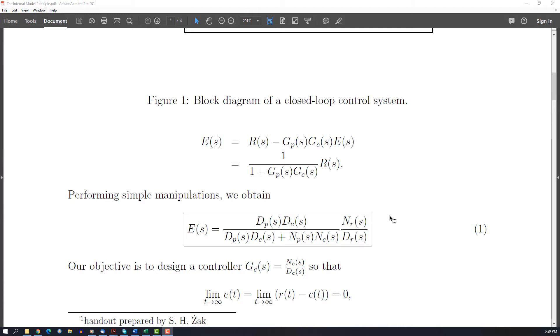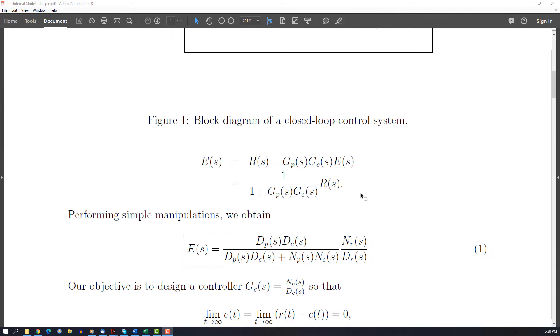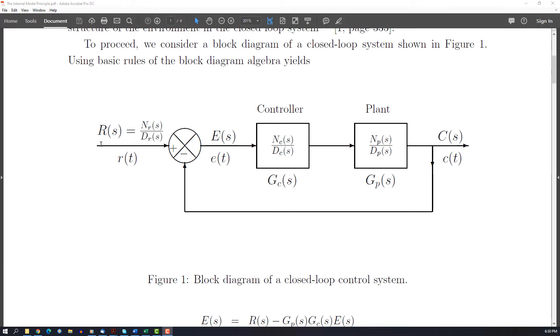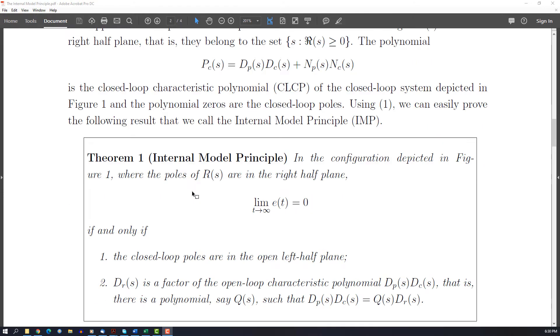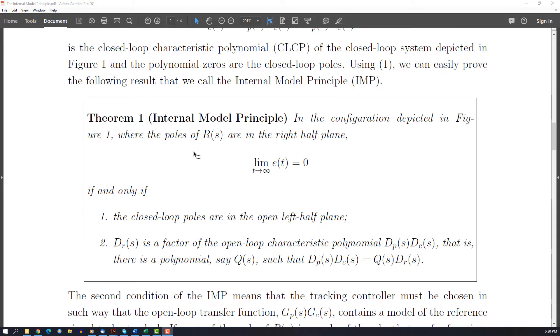The internal principle says that if you want to have perfect tracking of the output of the plant to the reference, which means that the error here will go to zero, the internal principle says that this is achieved if and only if...